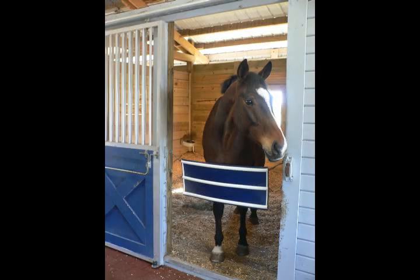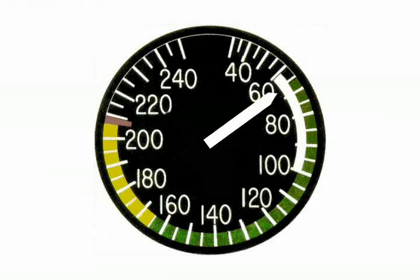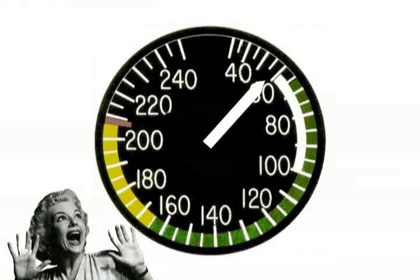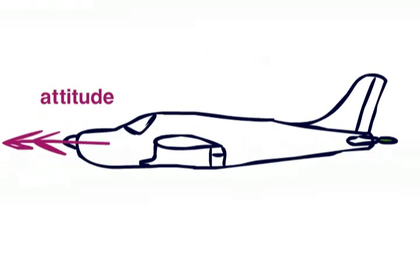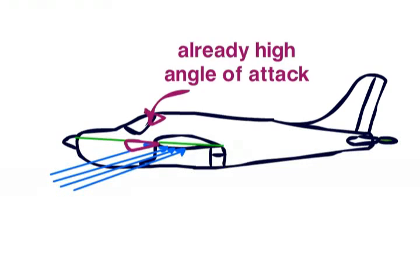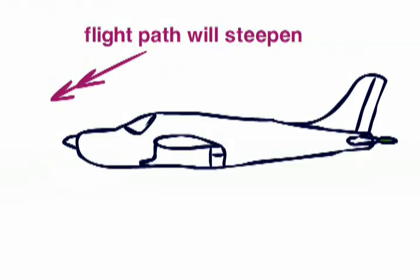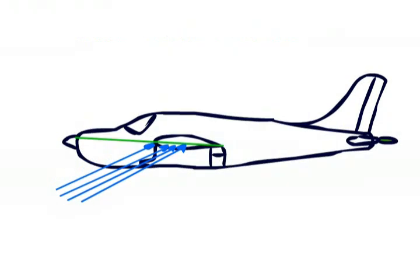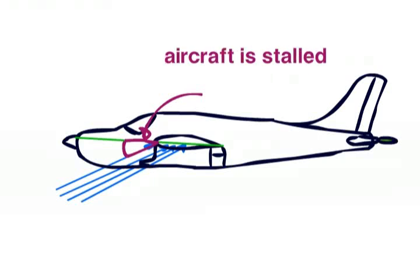Let's now look at a stall in a slightly more realistic scenario. Say you are on final approach for landing. Your airspeed decays and you are too busy to notice. The lift formula shows us that velocity is quite important to stay up in the sky. Coming in for landing, our attitude is like this, but our flight path is like this. The relative airflow, being the opposite of our flight path, is like this, and you can see that there already exists a high angle of attack. If our airspeed reduces and attitude is maintained, our flight path will now alter to become steeper, which alters the relative airflow, which increases the angle of attack further. You can see that this now means you will have stalled the aircraft — and this is actually a stall you practice in the PPL syllabus, called a power-off stall.